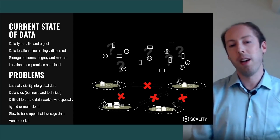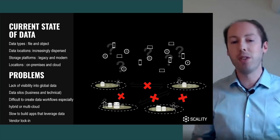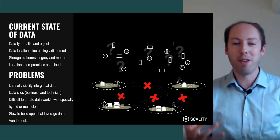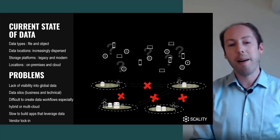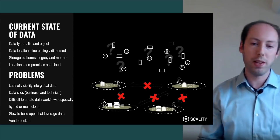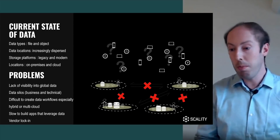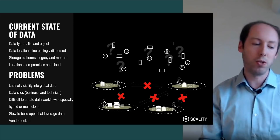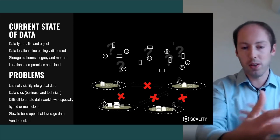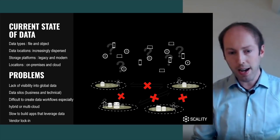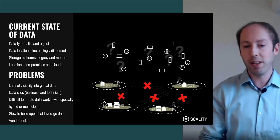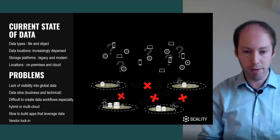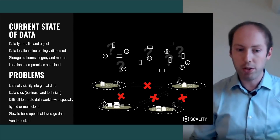Some of the problems we observed: you really don't have any visibility into the global data. There's a lot of data you're paying for every single month, but you don't have visibility into data sitting in various silos. The silos themselves are both a business issue and a technical issue — every single one needs to be maintained, upgraded, managed, and backed up. There's also a business issue because gathering information out of all that data across various storage systems is really, really tricky. It's difficult to create data workflows that cross those silos, especially when you go hybrid or multi-cloud, because all of those have their own APIs or don't even have any API whatsoever.